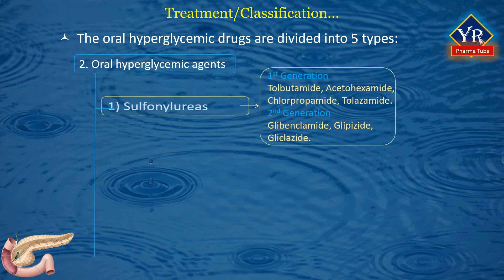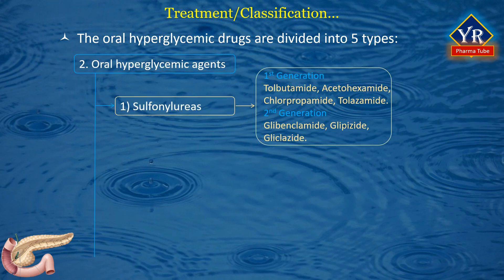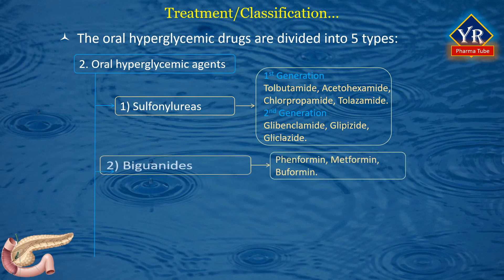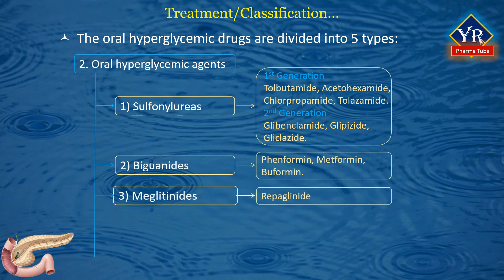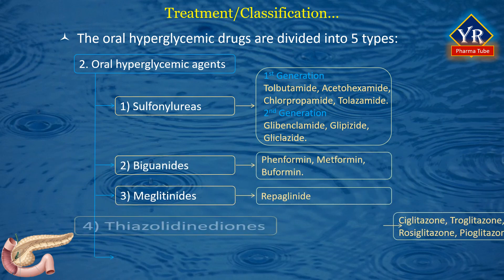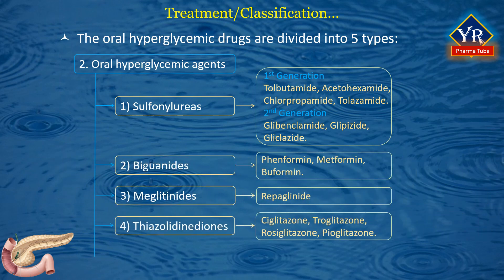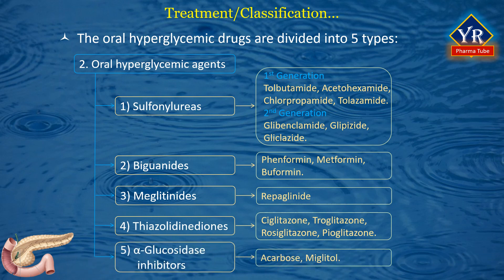The five types of oral hypoglycemic agents are: number one, sulfonylureas; number two, biguanides; number three, meglitinides; number four, thiazolidinediones; and number five, alpha-glucosidase inhibitors. Examples of drugs under each class have also been mentioned in the figure. The details of each class of drugs as per the course content will be discussed in the coming classes.